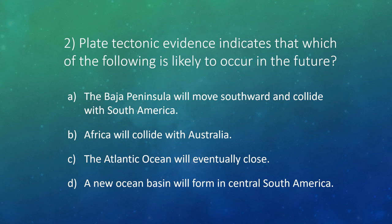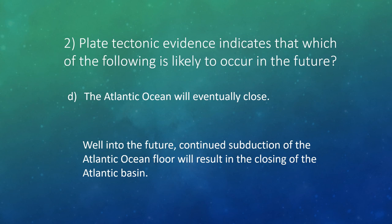Question 2: Plate tectonic evidence indicates that which of the following is likely to occur in the future? The answer is D: the Atlantic Ocean will eventually close. Well into the future, continued subduction of the oceanic floor in the Atlantic will result in the closing of its basin. Note that today there is not much subduction in the Atlantic Ocean, but in the future it might get old enough to where that does happen and then it closes up.